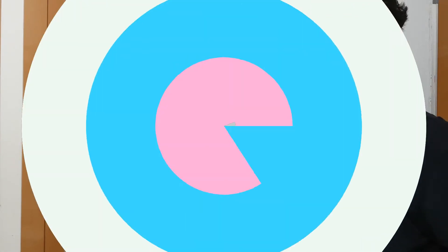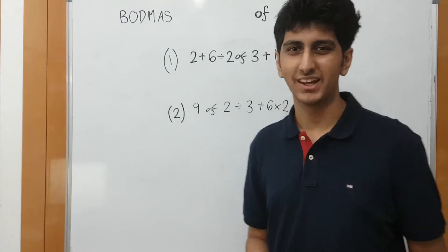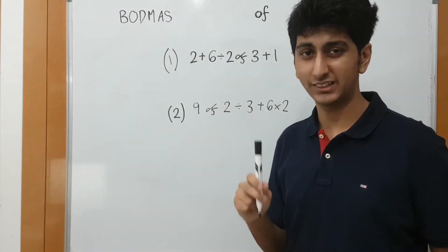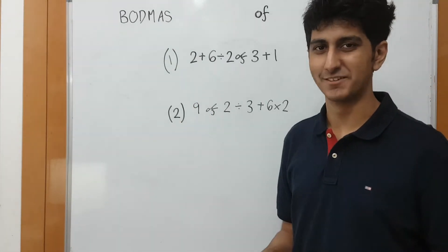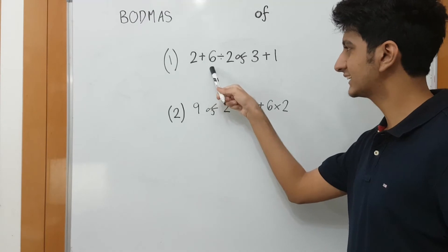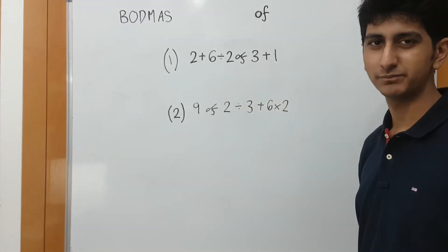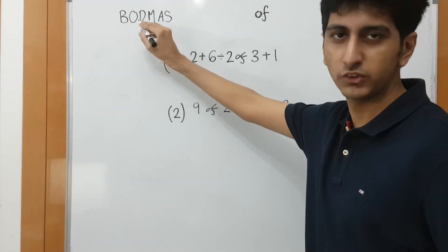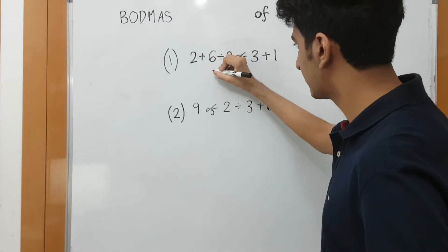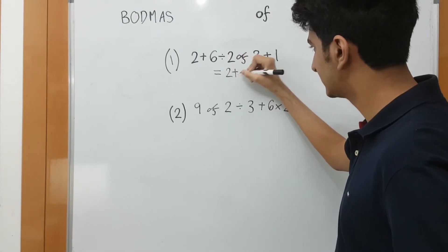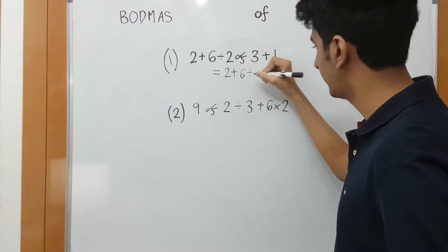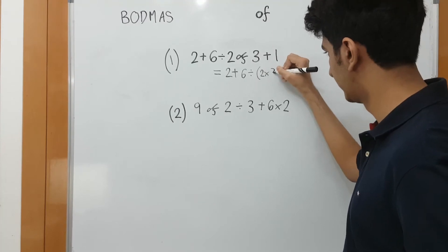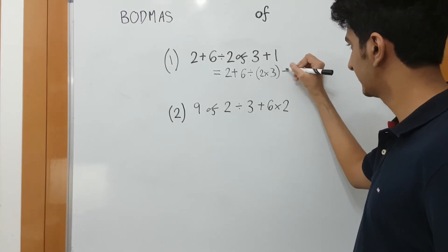Let's see some examples. This is a very simple topic. This is only two examples. We will see other brackets in brackets because there are more applications. Let's see. 2 plus 6 divided by 2 of 3 plus 1. So, when of comes, we have to solve O first. So, we will replace this by 2 plus 6 divided by, we have to write 2 of 3 in brackets. 2 into 3. Close brackets. Plus 1.